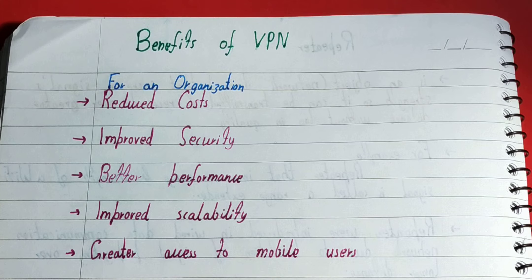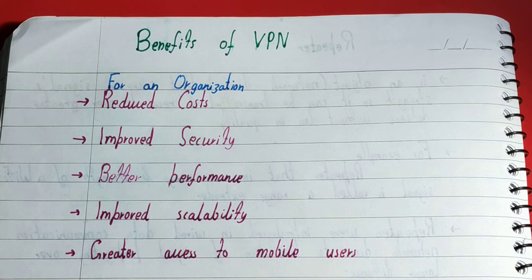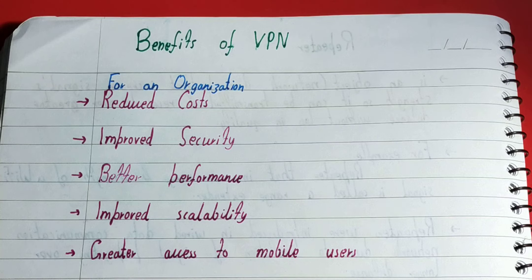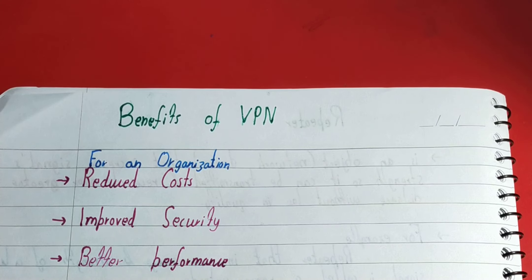The last benefit is greater access for mobile users. People in an organization may go on business trips or work from home or other places. With VPN, they can access organization data from any place and the data remains safe. VPN encrypts your data, encapsulates it, and sends it through tunneling — applying multiple layers of protection that make your data very secure.